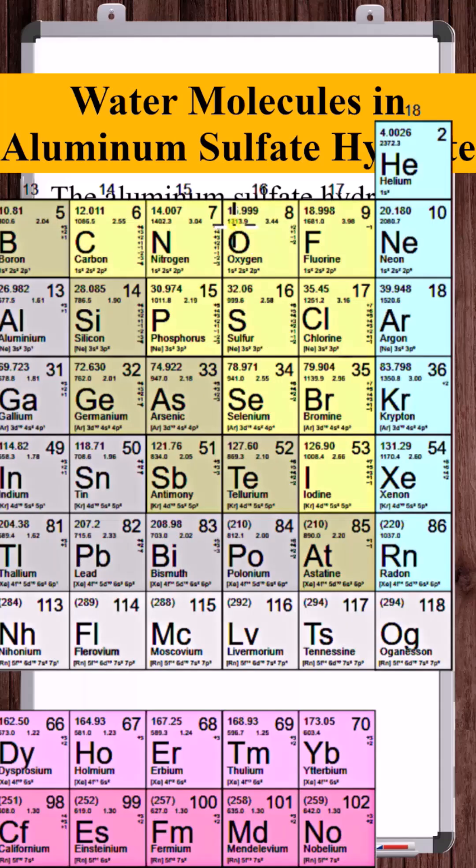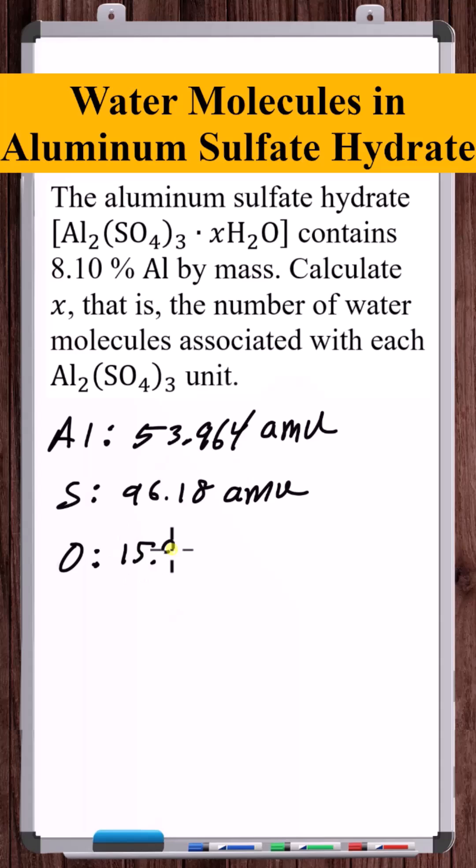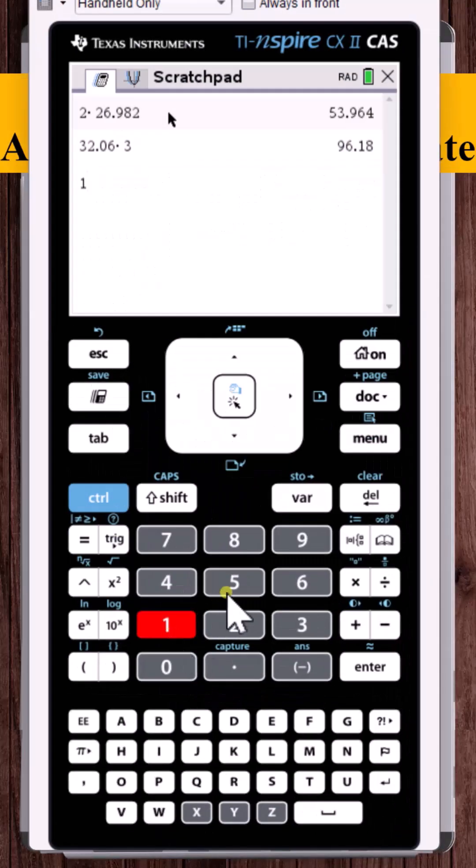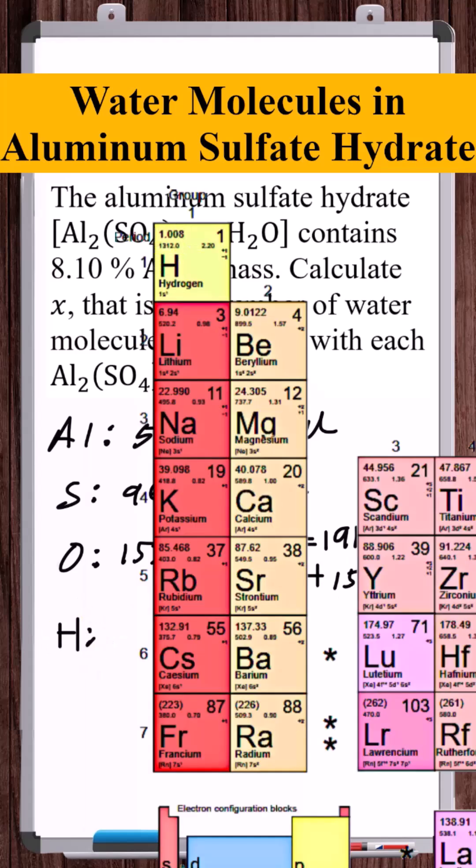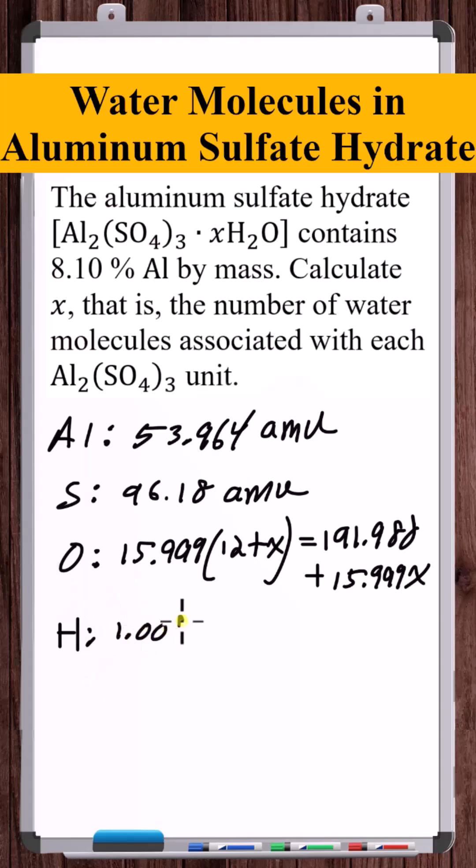Now oxygen, atomic weight 15.999, and there's 12 plus X oxygen atoms. Now hydrogen, atomic weight 1.008, and there's 2X hydrogen atoms.